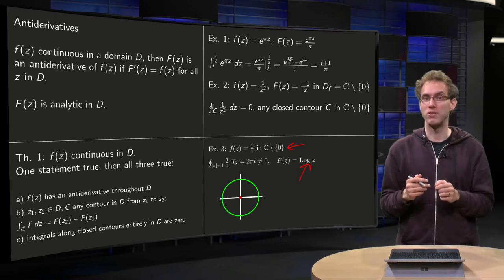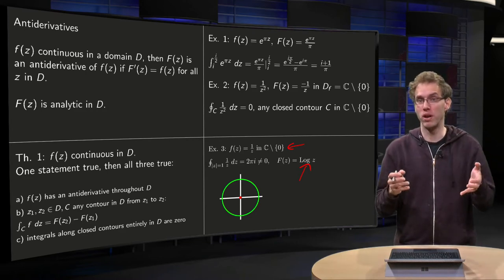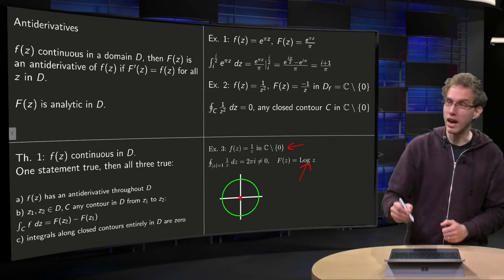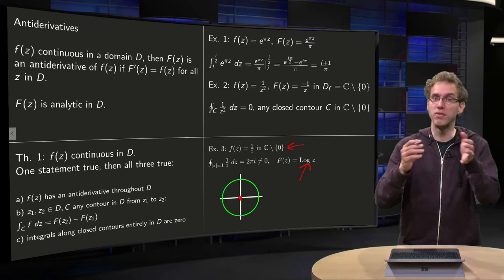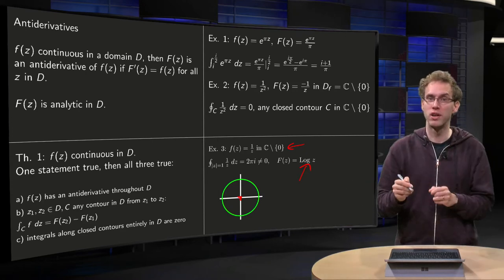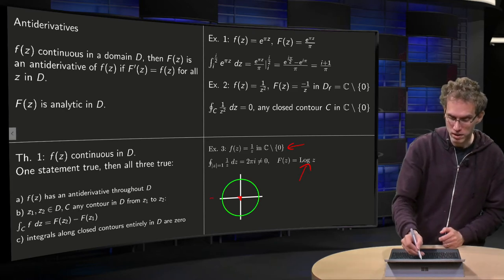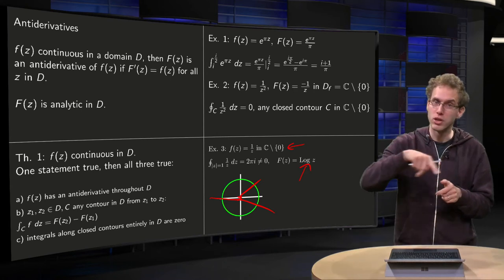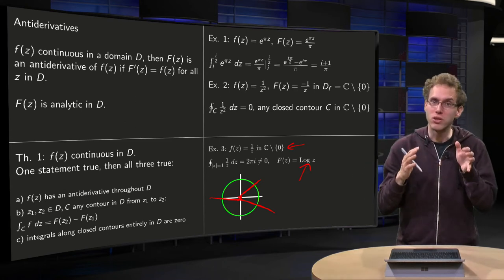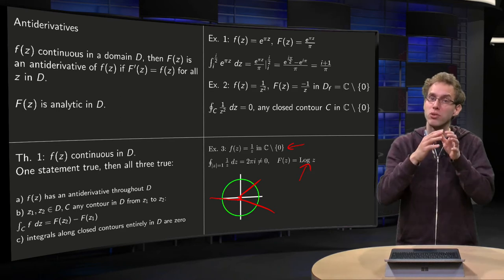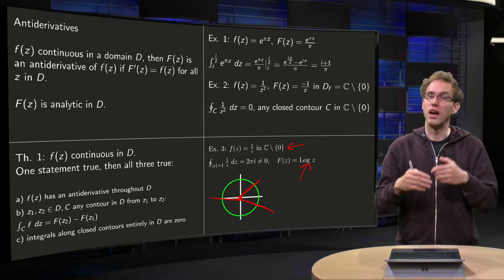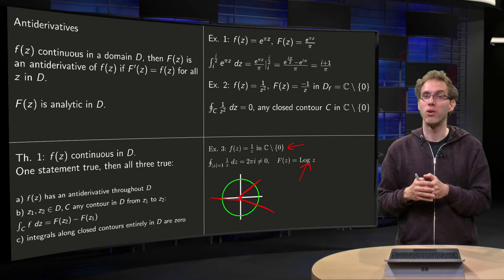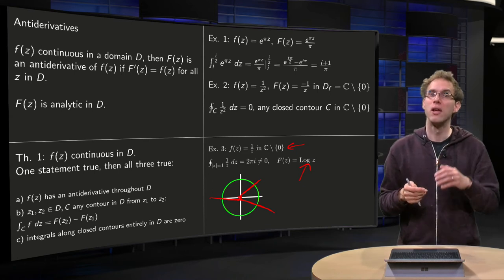Well, this capital log of z has a branch cut somewhere. If you take any log of z, you have a branch point at zero and you have a branch point at infinity. And you have to connect those points. So no matter how you connect them, like this or like that or like that, you will always intersect your unit circle. So it is not possible to define your antiderivative through all of D. So that's why the theorem doesn't apply in this case. And you already knew that because the integral along a closed curve is not equal to zero.